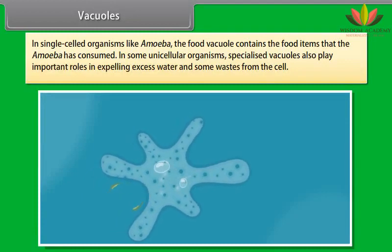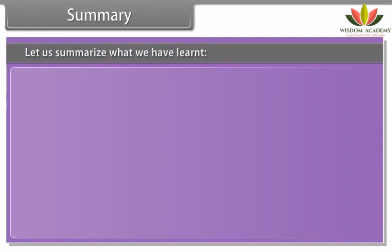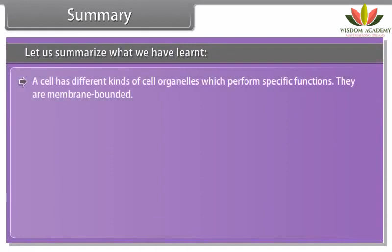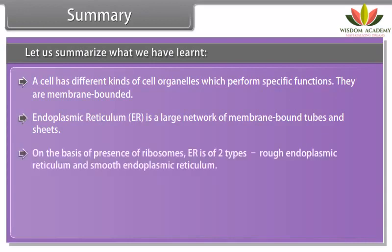Vacuoles are storage sacks for solid or liquid contents. In animal cells, the size of vacuoles is small, while plant cells have very large vacuoles. The central vacuole of some plant cells may occupy 50-90% of the cell volume. In plant cells, vacuoles are full of cell sap and provide turgidity and rigidity to the cell. Many important substances for life are stored in vacuoles, including amino acids, sugars, various organic acids, and some proteins. In single-celled organisms like amoeba, the food vacuole contains food items consumed. In some unicellular organisms, specialized vacuoles also play important roles in expelling excess water and wastes from the cell.